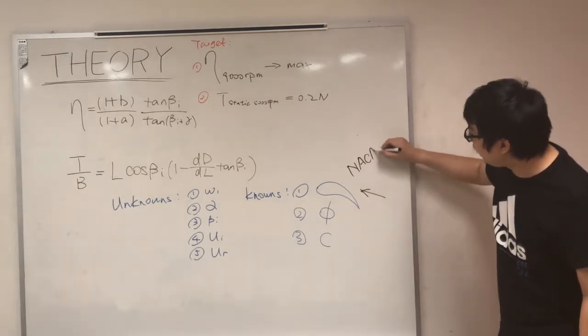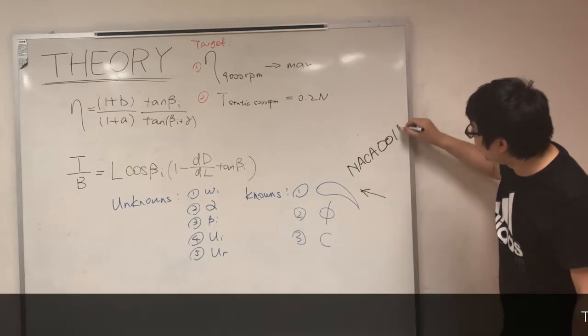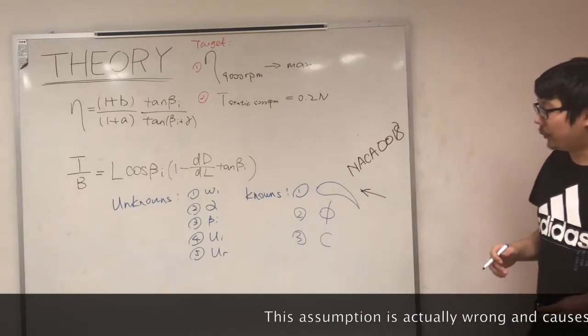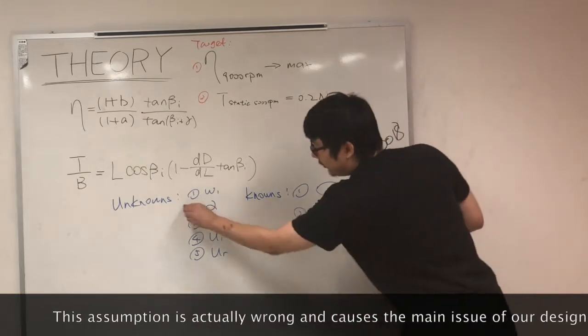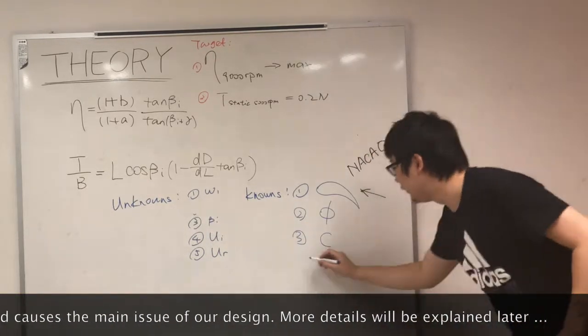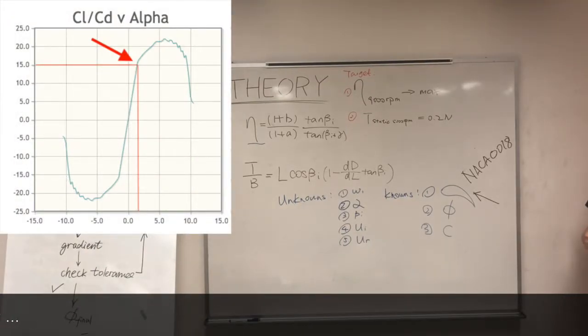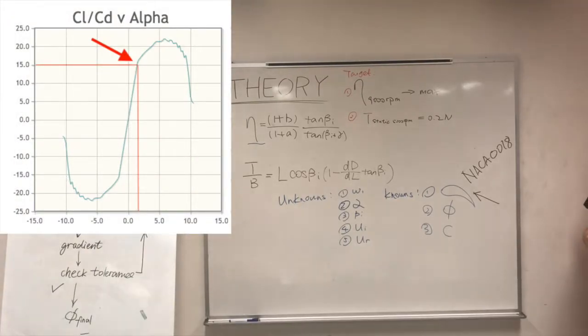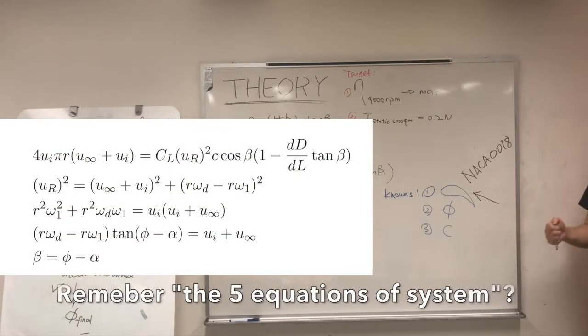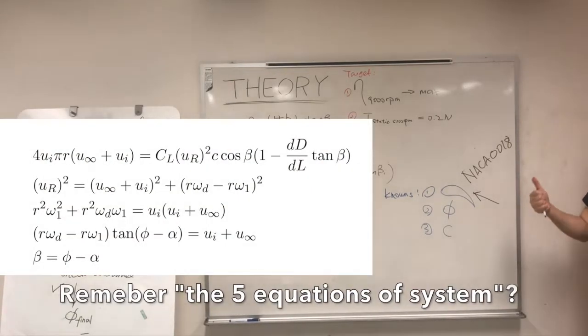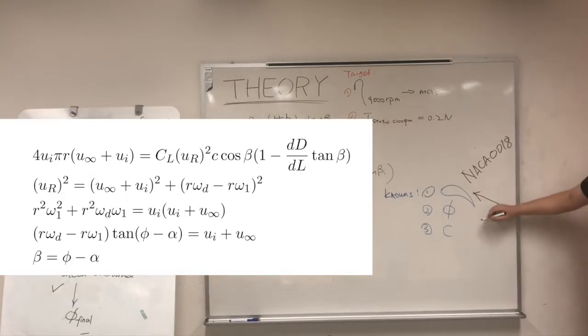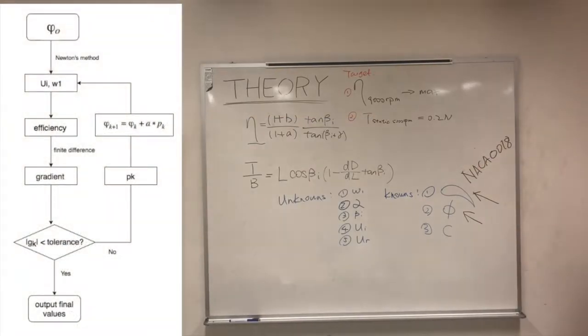We choose it to be NACA018. We also define the angle of attack alpha. The angle of attack alpha we choose is the value that provides the maximum lift-to-drag ratio. With these two inputs, and the momentum equation, and the velocity triangle, we iterate the twist angle phi, using the process stated by the flow chart here, to optimize the efficiency at 9000 RPM.